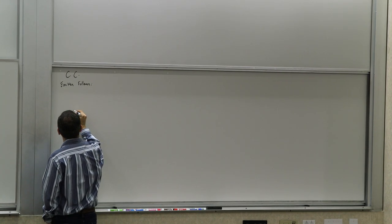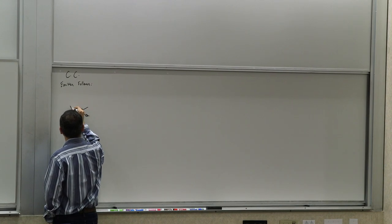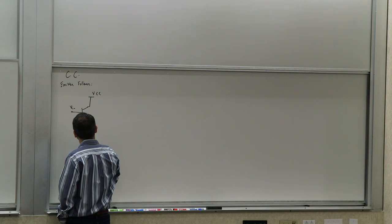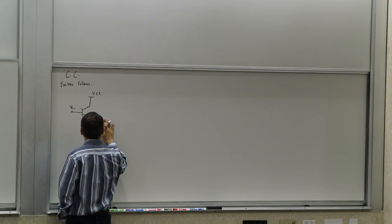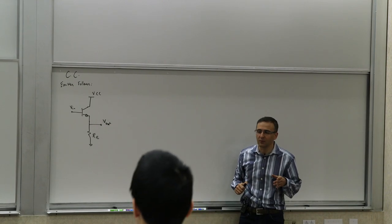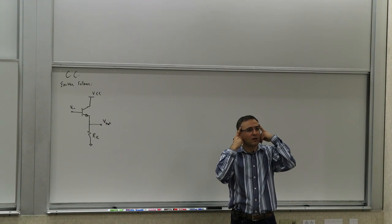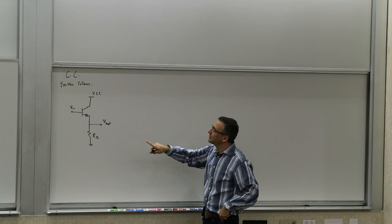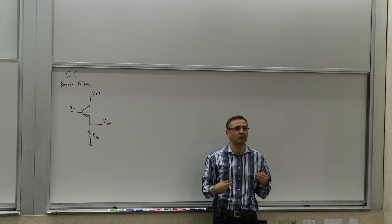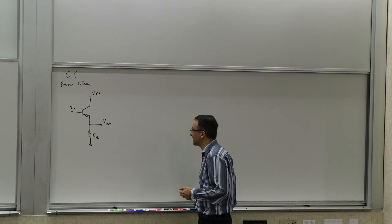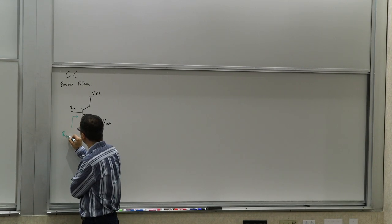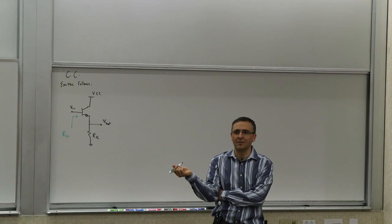The emitter follower is a stage where you apply a voltage to the base as your input, but instead of taking your output from the collector, you take it from the emitter. Before analyzing it, let's think about what we can expect. What do we expect the input resistance to be? I encourage you to think about it without writing equations, to develop some intuition. The input behavior is not fundamentally different from the common emitter with degeneration.